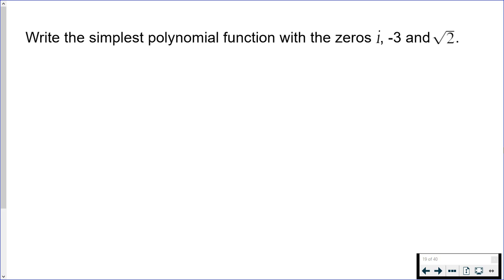In this video, we're going to write the simplest polynomial function that has the following roots, zeros, solutions, whichever word you want to use. We've got i, we've got -3, and we've got √2.